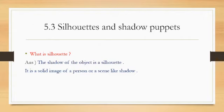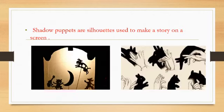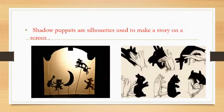A still heart is a black color shadow of the object. And shadow puppets are still hearts used to make a story on the screen.